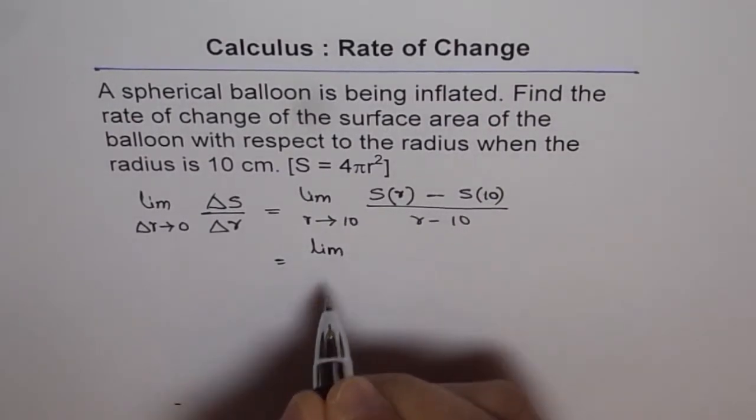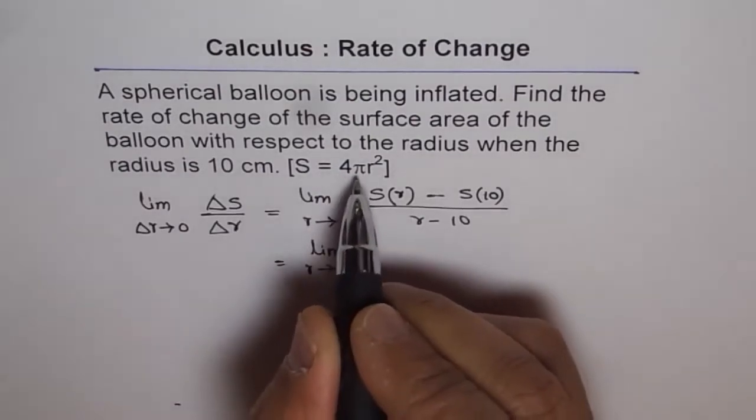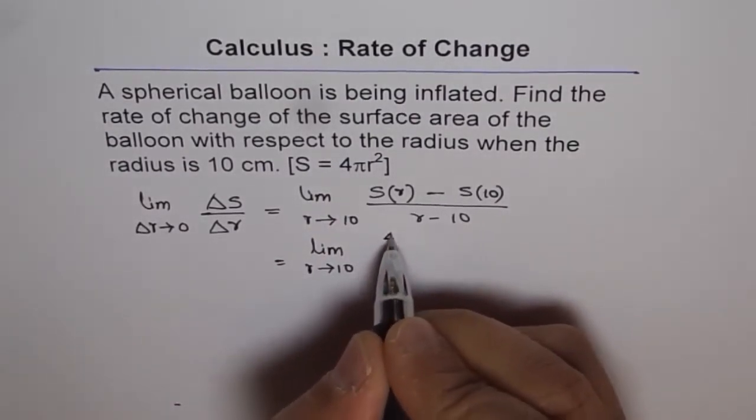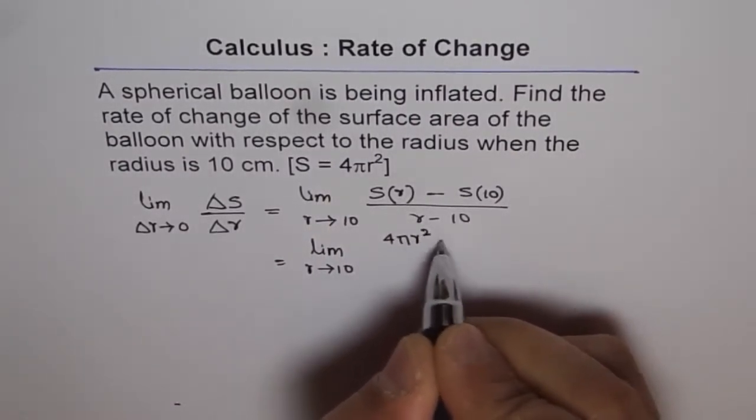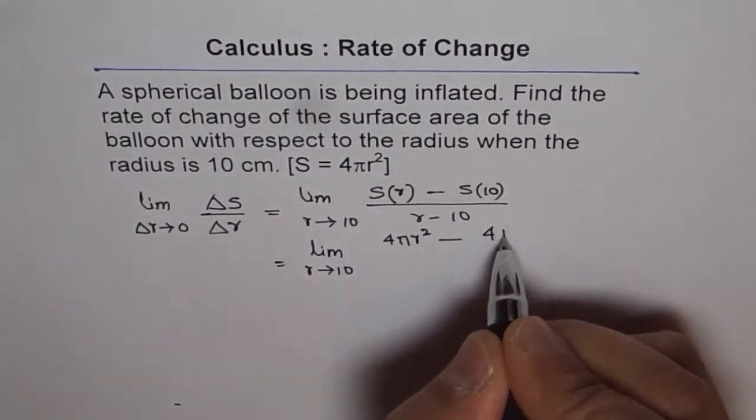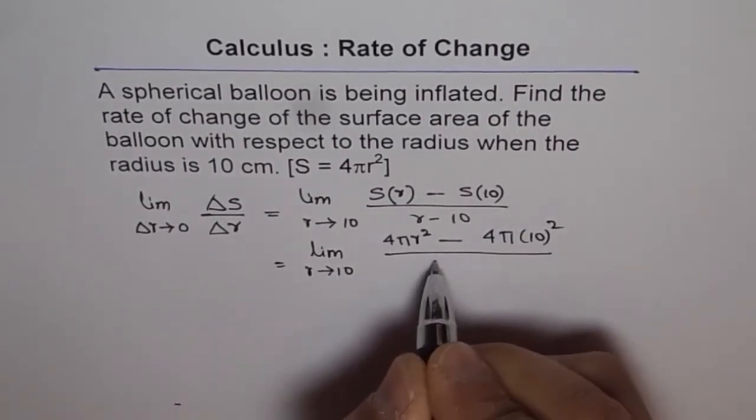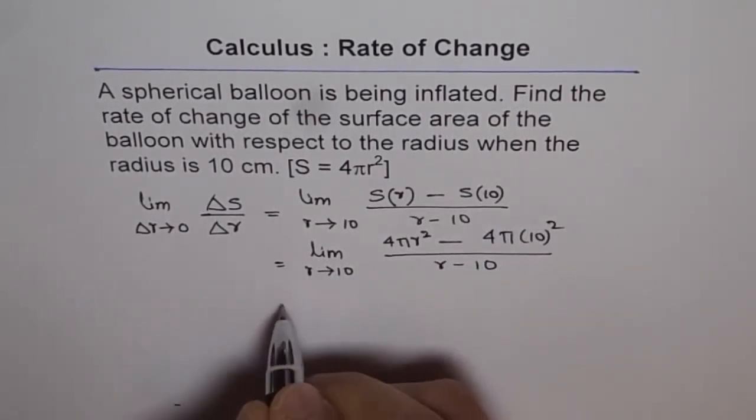We get limit r approaches 10. Then, the formula for surface area is 4 pi r square. Let us keep it very general. 4 pi r square minus, at 10, r is 10. So we will plug in 10 here. 4 pi 10 square divided by r minus 10.